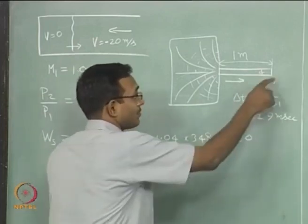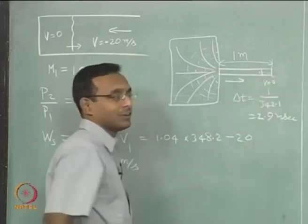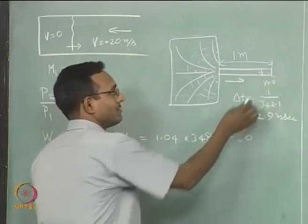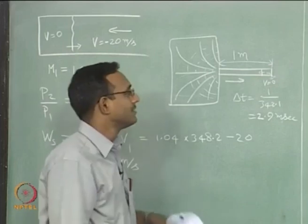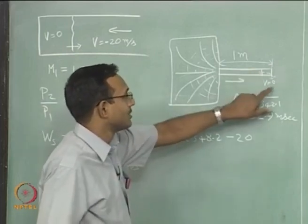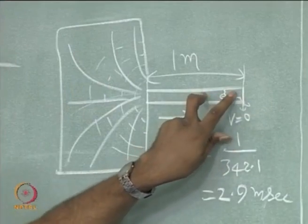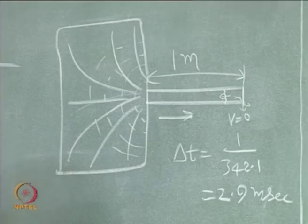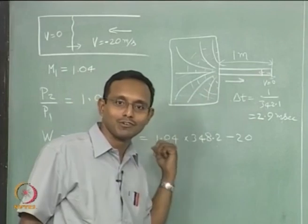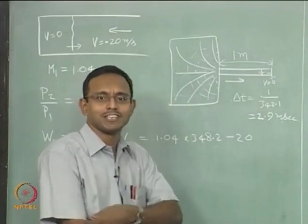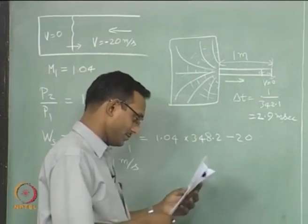In case I did not stop it completely but had a small leak — let us say 1 metre per second — then this flow velocity is not zero but 1 m/s. The actual delta V I am imposing is only 19 m/s. Now I have to solve the problem again. You will find that the Mach number of the new shock will be slightly less than 1.04, because it does not need as strong a change — lesser Mach number.